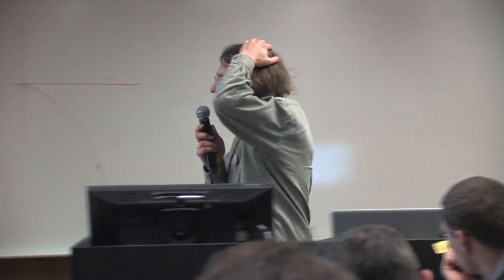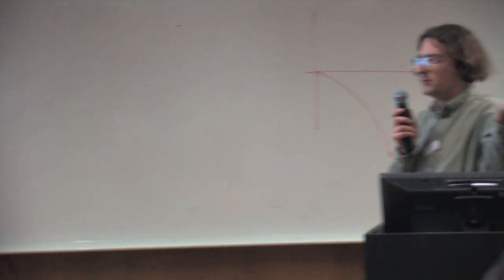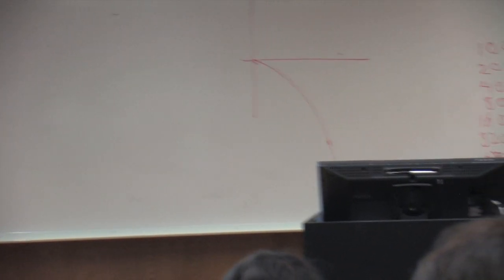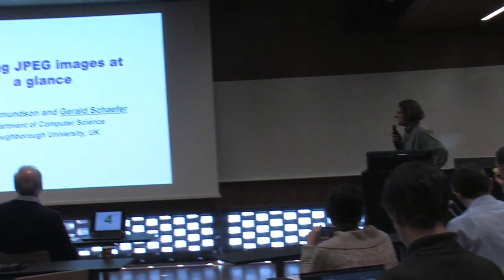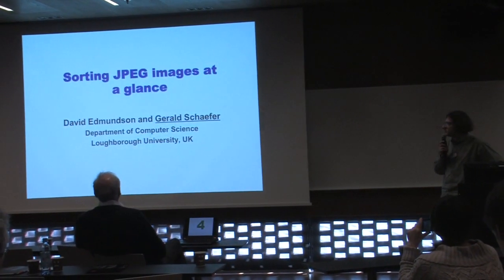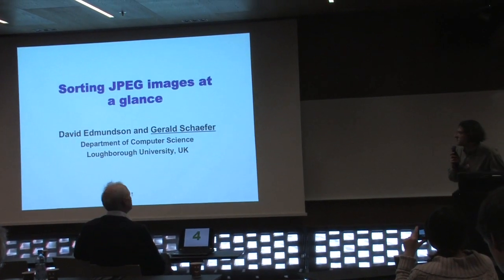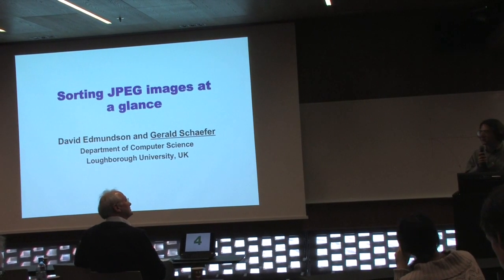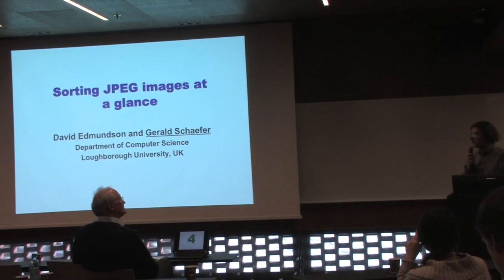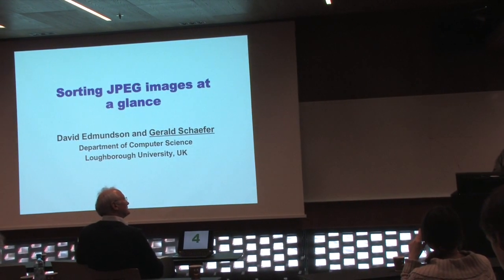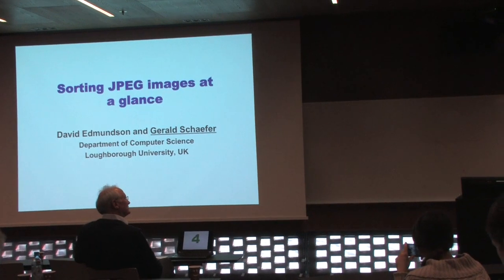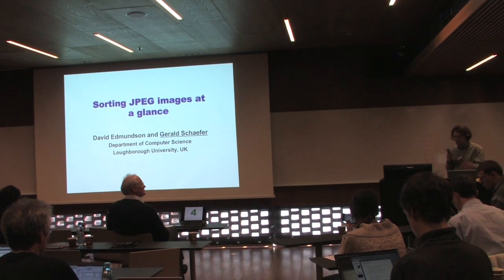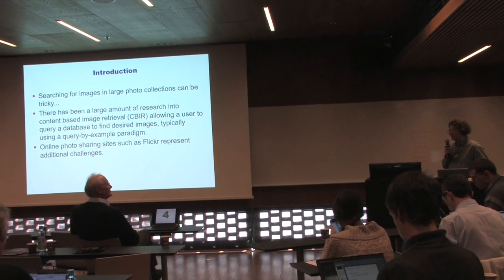Thanks for the introduction, which gave almost everything away, so I'll try to keep it short so we can make it for lunch. The first author, David Edmondson, is one of my PhD students now in his third year. The theme of his research is compressed domain image retrieval, in particular looking at doing that in the JPEG compressed domain — unlike many here, we're working on images rather than videos.